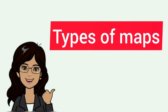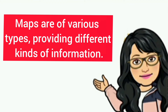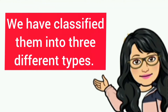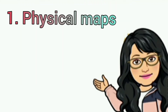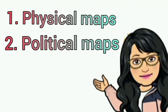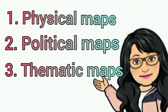Now let us move to the next topic: types of maps. Maps are of various types, providing different kinds of information. On the basis of the information provided, we have classified them into three different types: the first is physical maps, the second is political maps, and the third is thematic maps. Let us learn about each type of map in detail.